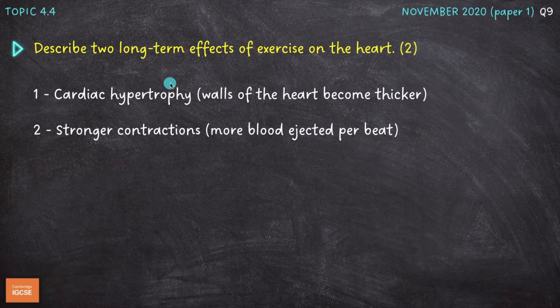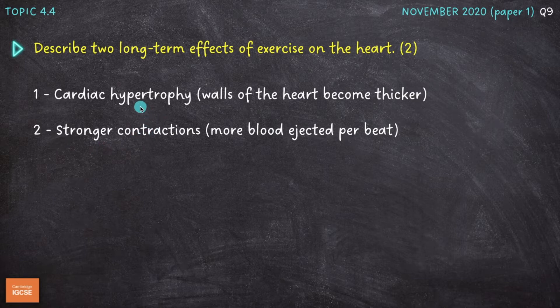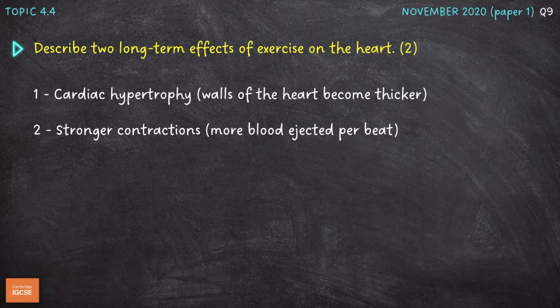The two long-term effects I've gone for are cardiac hypertrophy, which essentially means that the walls of the heart, or the muscle of the heart, becomes thicker and stronger, and that the contractions of the heart become stronger as well, which is linked to this cardiac hypertrophy point. If the muscle becomes stronger and thicker, then the contractions of the heart become stronger, which means more blood can be ejected per beat, or we have an increase in stroke volume. This question is so frequently asked — it came up at least once in my previous chapter 4 video as well.